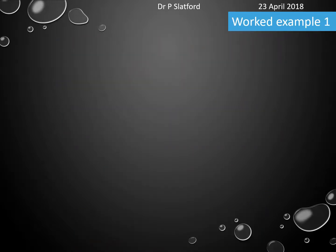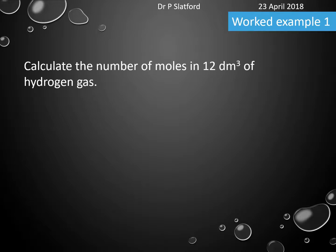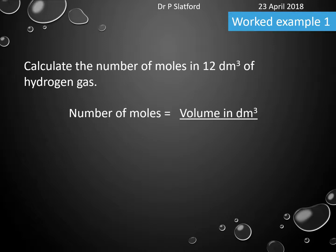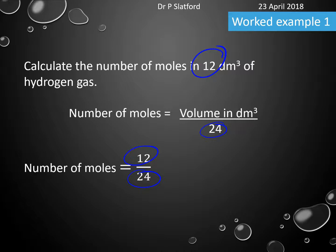Let's work through a couple of examples. We're going to calculate the number of moles in 12 dm³ of hydrogen gas. Number of moles equals the volume in dm³ divided by 24. Plugging our numbers in: 12 divided by 24 equals 0.5 moles. So a very simple calculation — take the volume you've been given in the question, here it was 12, and divide it by 24, as long as the units are the same.